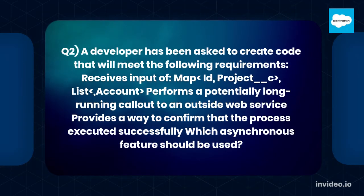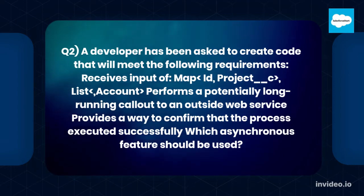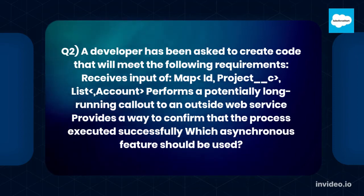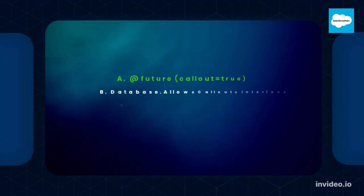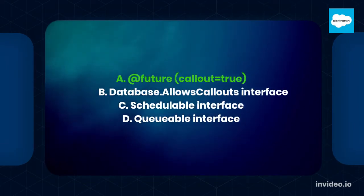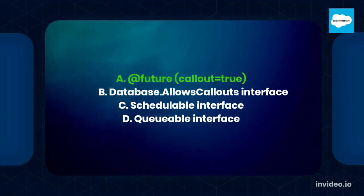Question 2. A developer has been asked to create code that will meet the following requirements: receives input of a Map or List, performs a potentially long-running callout to an outside web service, and provides a way to confirm that the process executed successfully. Which asynchronous feature should be used? A. @future(callout=true). B. Callout. C. Schedulable Interface. D. Queueable Interface.